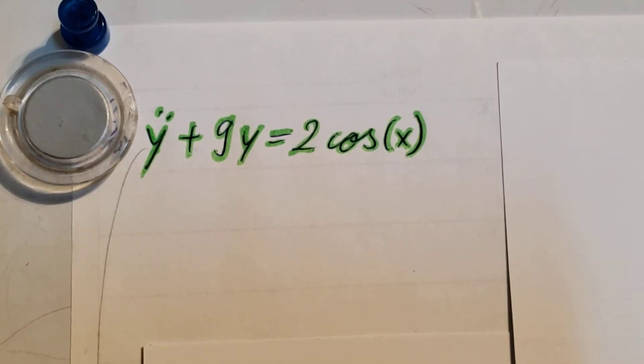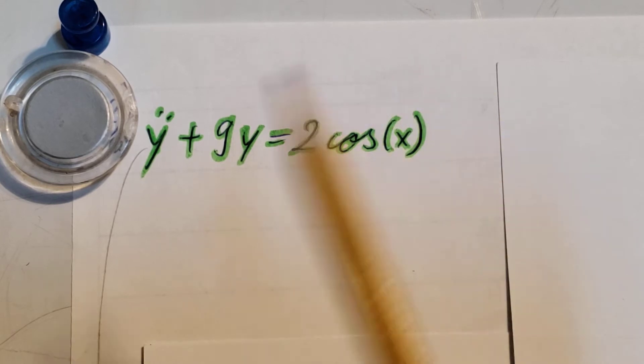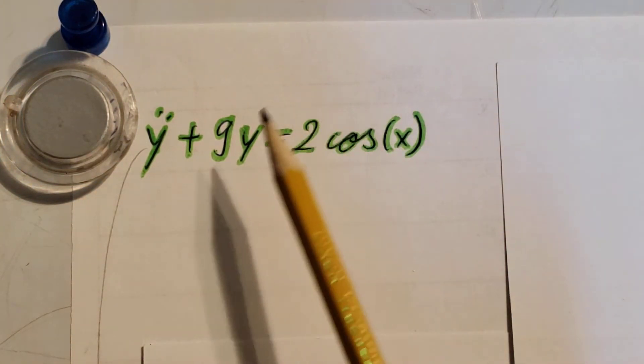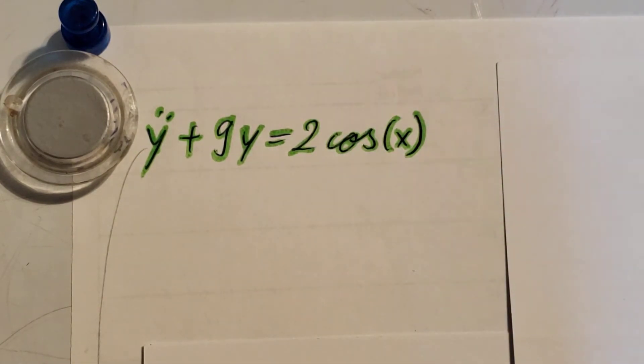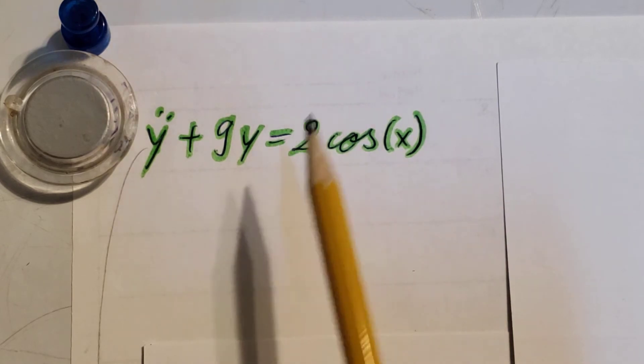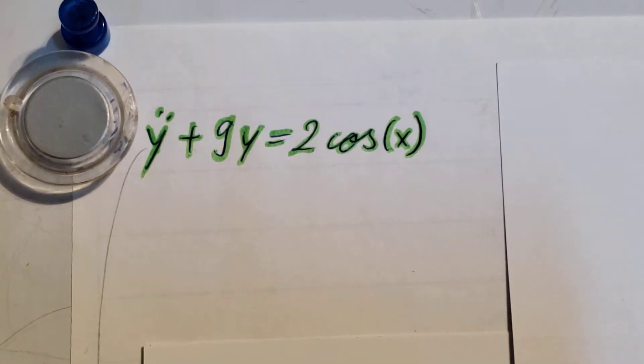We are working with a second-order linear differential equation: y double prime plus nine y equals two cosine x. Looking at the right-hand side, two cosine x, this is a good clue that the undetermined coefficient method will be helpful. When we have some kind of polynomial, e to the power of whatever, or a sinusoid like sine or cosine, we are able to use the undetermined coefficient method.